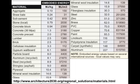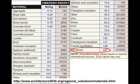Embodied energy is all the energy that goes into producing a product. We have everything from straw bale at a quarter megajoule per kilogram to aluminum at 227 megajoules per kilogram. It's worth noting you would need the equivalent of about five kilograms of petroleum to produce one kilogram of aluminum.